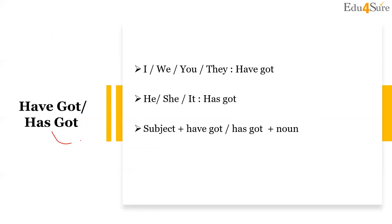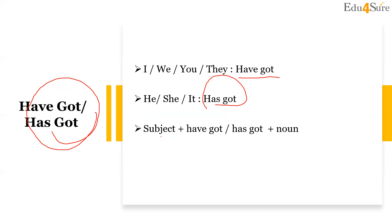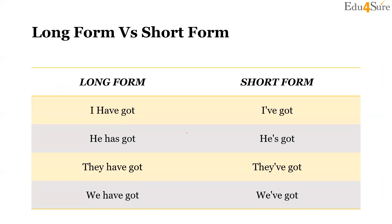The last topic is 'have got' and 'has got'. 'Have got' is used with I, we, you, they. 'Has got' is used with he, she, it — this is the grammar rule. The subject determines whether you use 'have got' or 'has got', followed by a noun. Long form 'I have got' shortens to 'I've got'; 'He has got' shortens to 'He's got'.